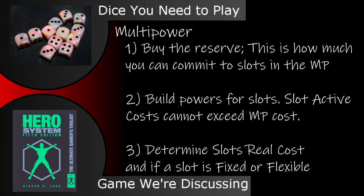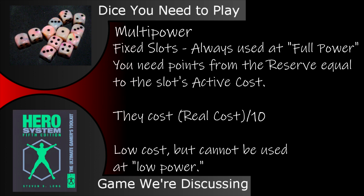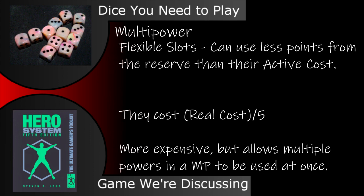Creating a multi-power follows these steps. You start off by buying the reserve. The base cost for the reserve is how much you can commit to slots in the multi-power. You then build a power to make a slot, and make note of the base costs and the active cost. The active cost of that power cannot exceed the base cost of the reserve, but it may be lower. You then determine the real cost of the power and decide if you want the slot to be fixed or flexible. For fixed slots, you need to use a number of points from the reserve equal to the power's active cost any time that you use it, and the cost of this slot type is the power's real cost divided by 10. For flexible, you may use less than the power's active cost when assigning points from the reserve, allowing you to use multiple powers at once. This slot type's cost is the real cost of the power divided by 5.